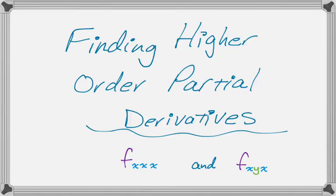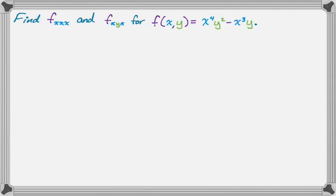In this video we are going to find some higher order partial derivatives, specifically we're going to find partial x,x,x and partial x,y,x. Here's the problem we're going to deal with: we want to find partial x,x,x and partial x,y,x for f(x,y) = x to the fourth y squared minus x cubed y.